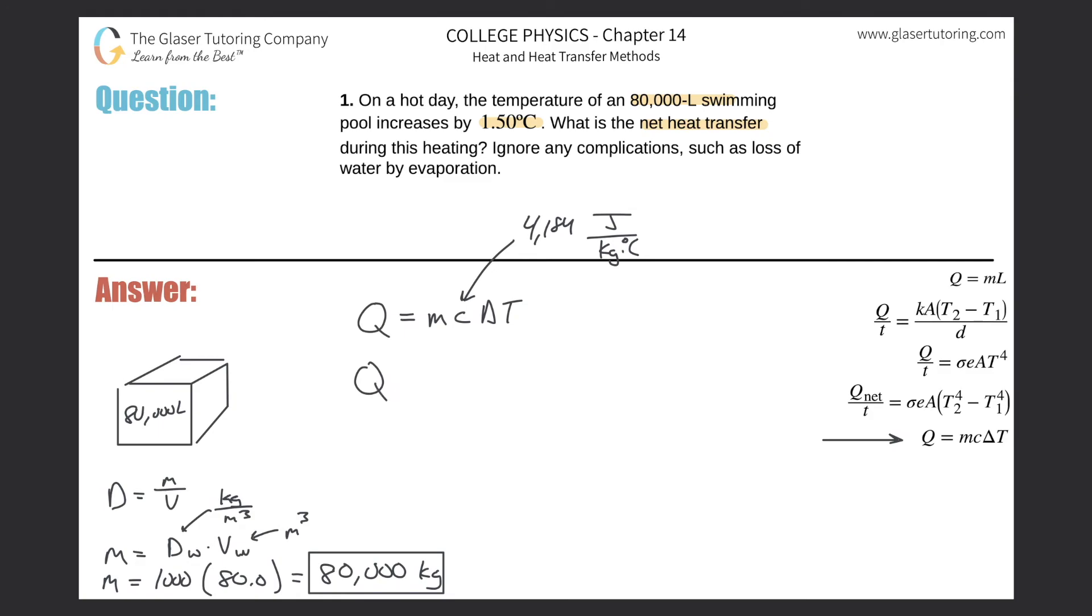Without belaboring the point, let's just plug it all in. So we have 80,000 multiplied by 4,184, multiplied by 1.50.